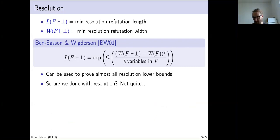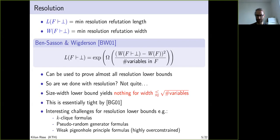Are we done? Well no, because there are formulas that require less than a square-root number of variables in width to be refuted, yet we still expect them to require very long proofs. The length-width trade-off is optimal and we cannot hope to improve it, so we need to resort to other means like bottleneck counting or restriction arguments.